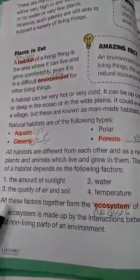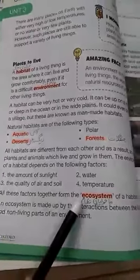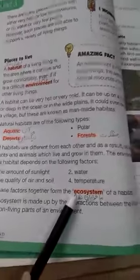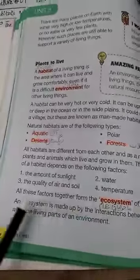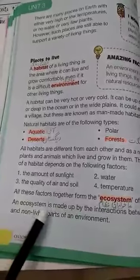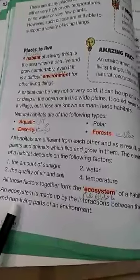All these factors together form an ecosystem. Ecosystem — highlight it and its meaning is maholiati nizam. An ecosystem is made up of the interactions between the living and non-living parts of the environment.